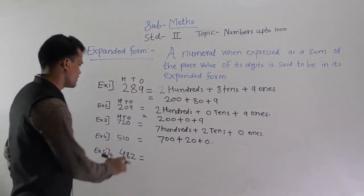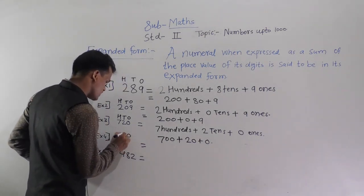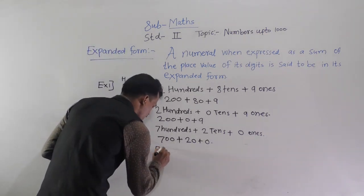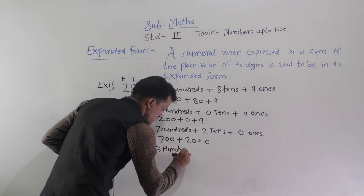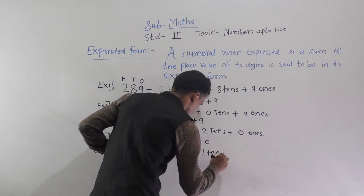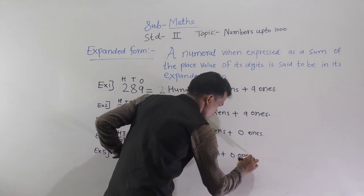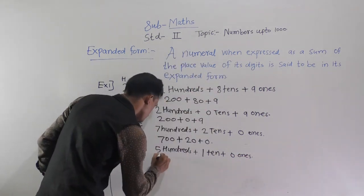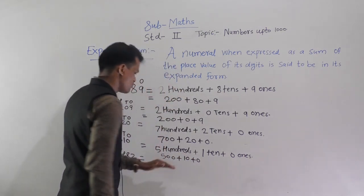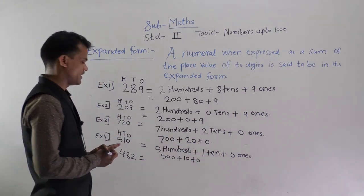Next example: here 0 comes at the ones place, 1 comes at the tens place, and 5 comes at the hundreds place. So write: 500 plus 1 ten plus 0 ones. In numerals: 500 plus 10 plus 0. This is the expanded form of 510.